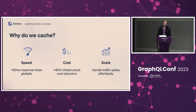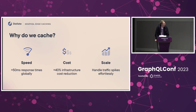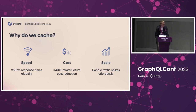Another reason is speed. The way modern CDNs work is that we have nodes all around the world that are really close to your customers. So if you have a cached response, you can see response times down to like 50 milliseconds, which is a bit ridiculous. And the third reason is scale — when you see a massive influx of traffic, you want to not have downtime, and that is made much easier if the requests never come to your origin.